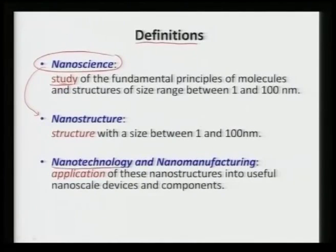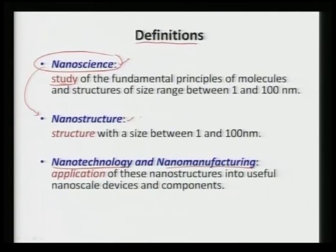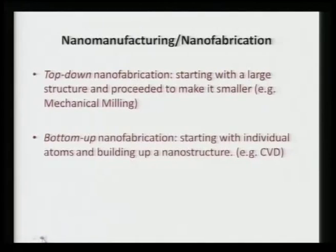Then there comes the term nano technology and nano manufacturing. Once we have all these nano materials, we need to have some sensitive instrument which can trap the nano particles and overlay them into forming a certain bigger entity. Nano technology is an art or application of these nano structures into some useful shapes which can make either components or devices to take advantage of these nano materials.